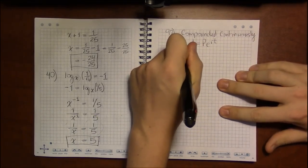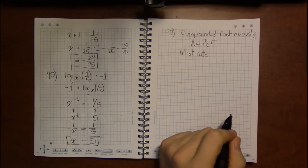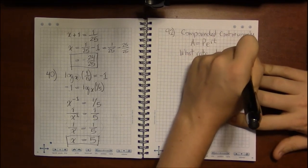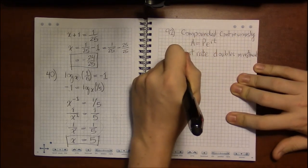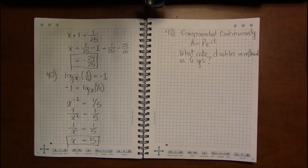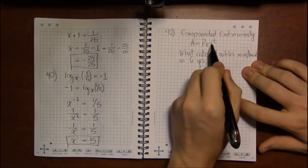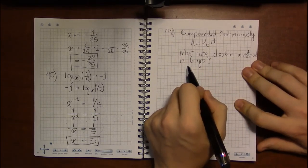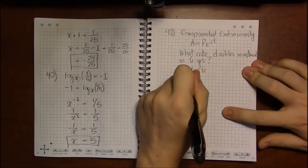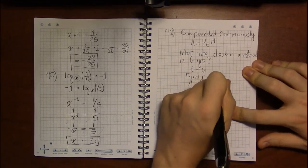So in problem 92 they're asking us, what's the interest rate that's going to double our money, compounded continuously, in six years? And it seems like they're giving us far too little information here to do anything with it. For instance, we're trying to find R, what rate that's going to satisfy these conditions. We know T is 6. We know we're trying to find R, but what about A or P?